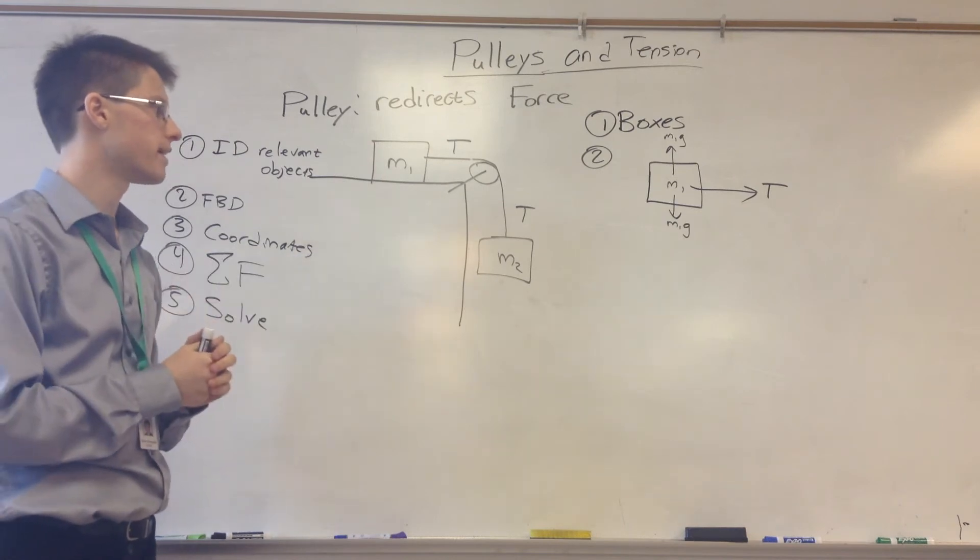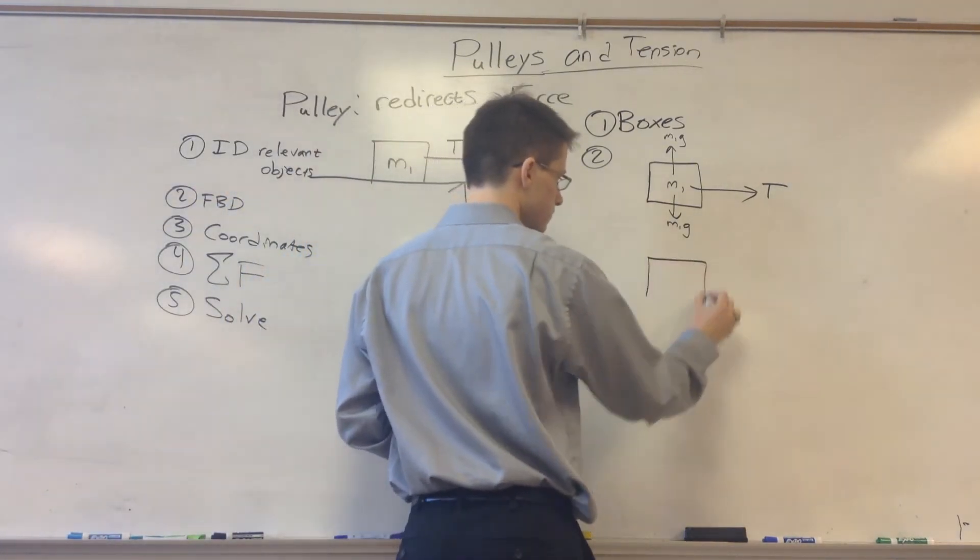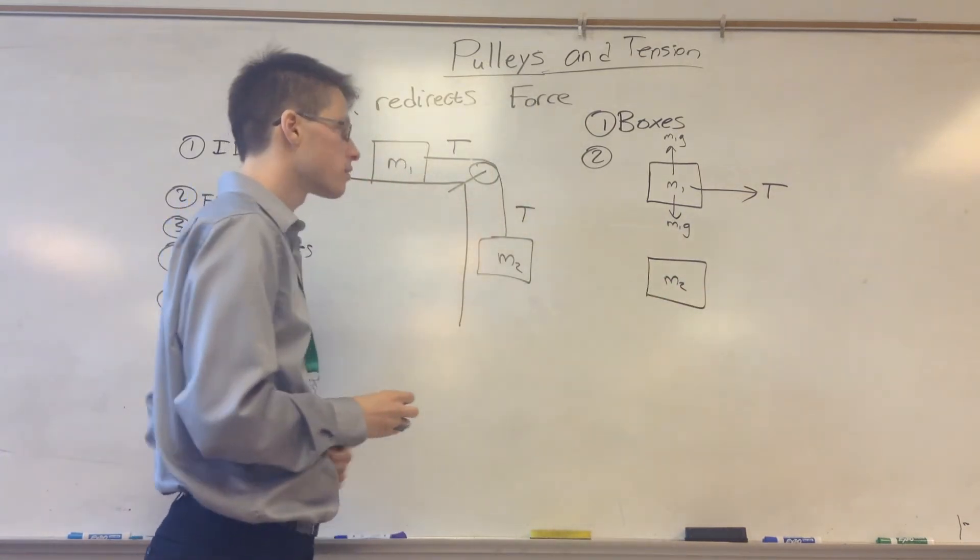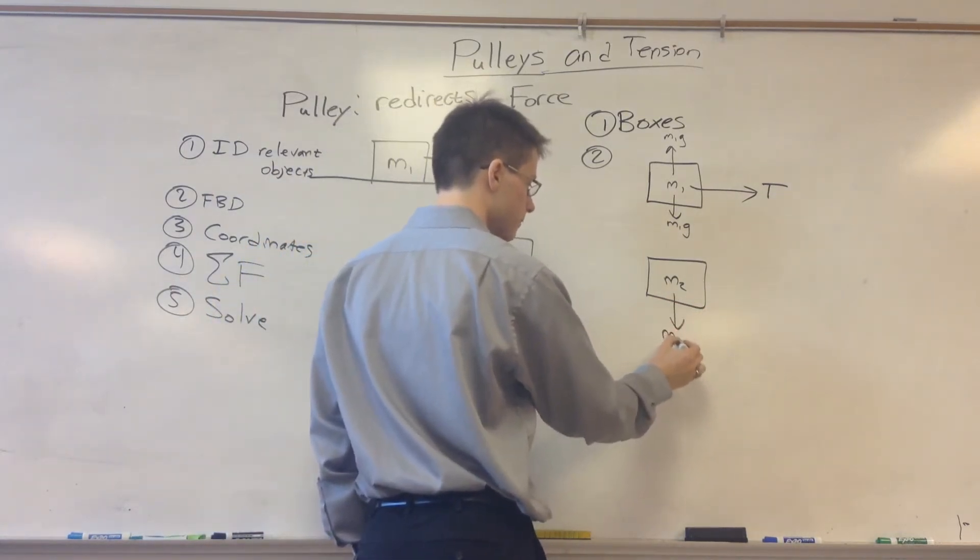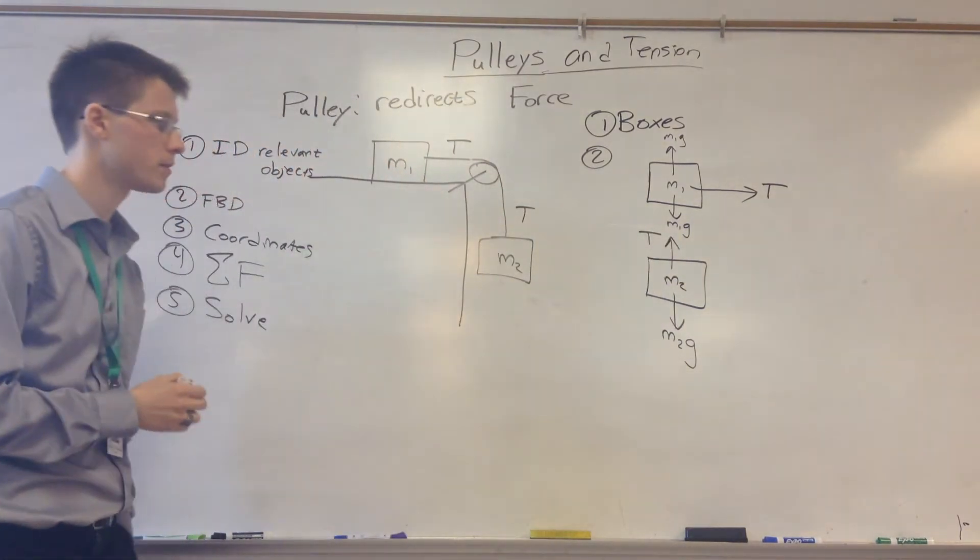That's our free body diagram for the first mass. For the second block, we're going to have gravity pulling it down, so M2g down, and we're going to have tension holding it up.